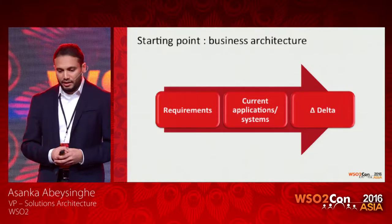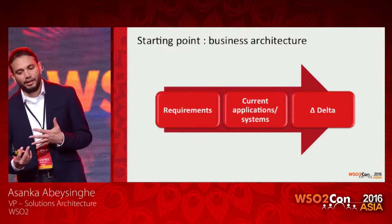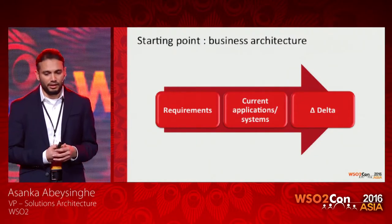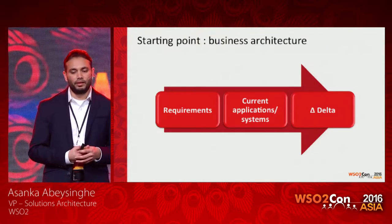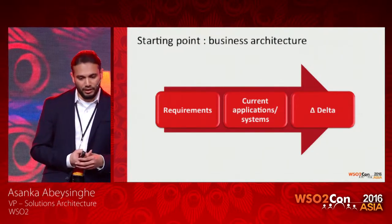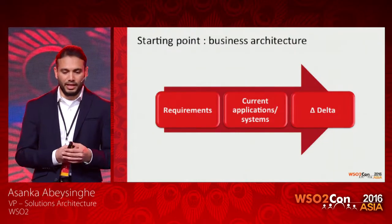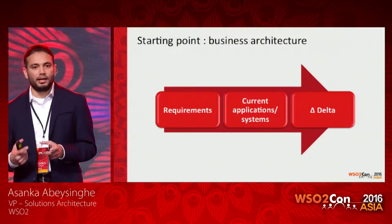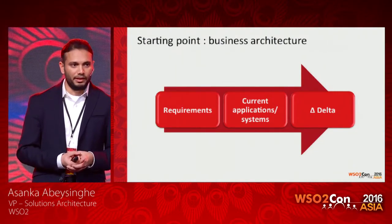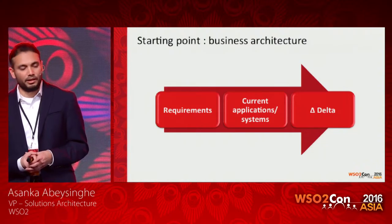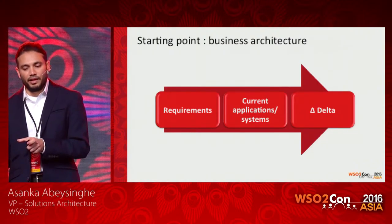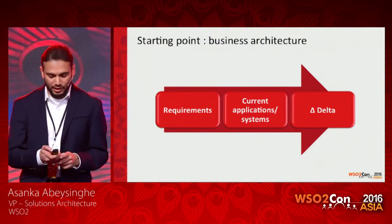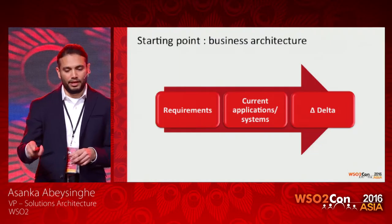In practice, before you apply the iterative nature to the architecture, you have to define the architecture. This is a process we apply with any project. The first thing is to get the requirements — we call that business architecture — and then look at the current applications and systems available in the organization, and identify the missing parts, or what we call the delta, what needs to be added to that particular system.